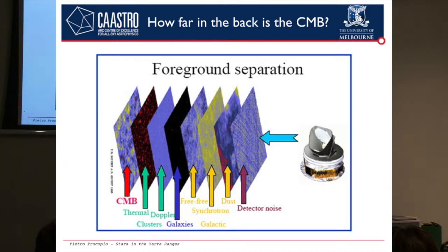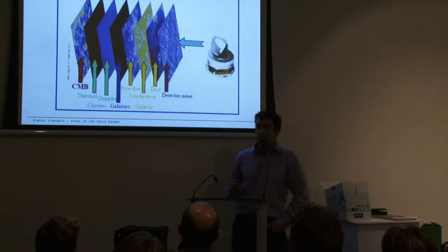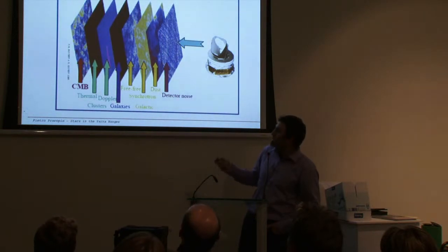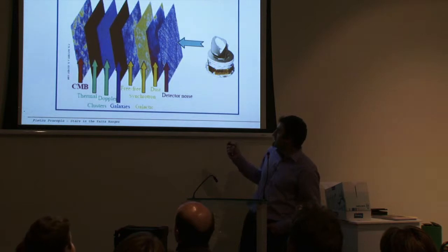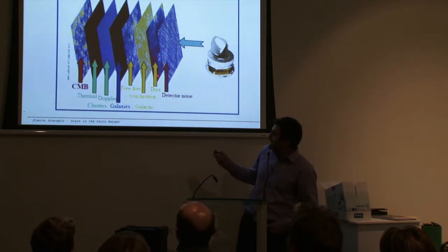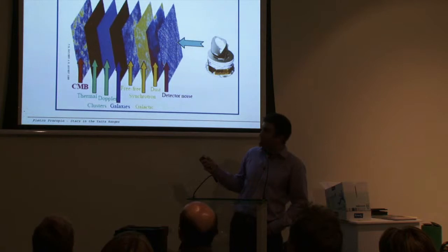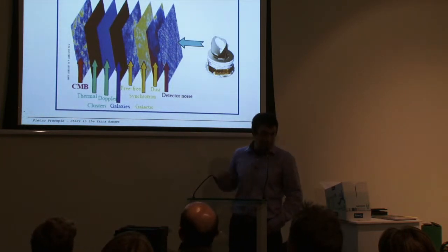What our satellites and detectors see in the sky is a superposition of emissions — like a superposition of pictures. On the back we have the CMB, the cosmic microwave background, and then we have a lot of foregrounds between the CMB and us. We really need to know very well how these foregrounds behave, how these pictures are made, because we want to subtract them — those foregrounds are much stronger than the background. The better we know them, the better we can subtract them.